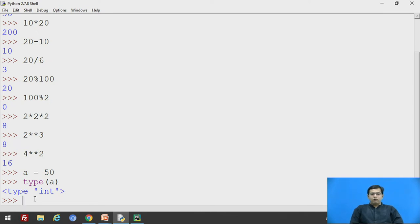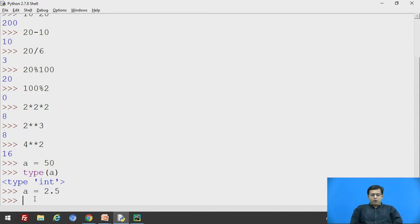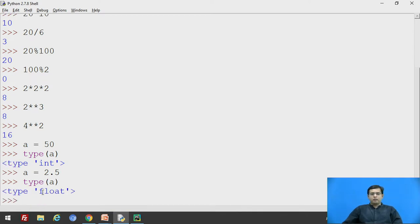Now for float, float is a floating precision and Python takes up to 15 decimal points precision value. So if we say a is equals to 2.5 and now if we check the type of a, the type is float.